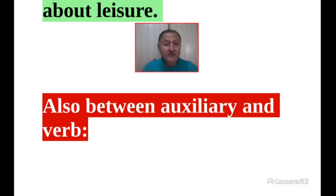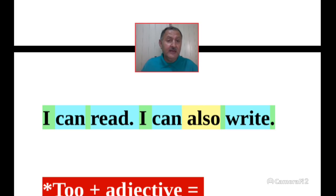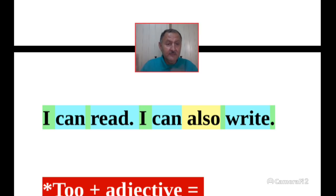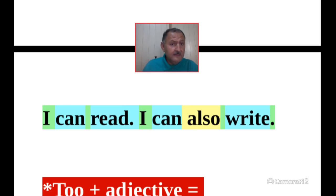'Also' between auxiliary and verb — cuando usamos un auxiliar like can, could, have, etc., 'also' goes between the auxiliary and the verb. I can read — I can also write. 'Can' is the auxiliary, 'write' is the verb, so 'also' goes in the middle: I can also write.